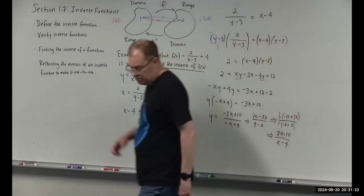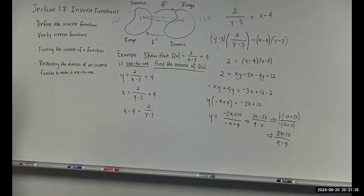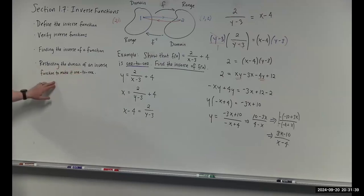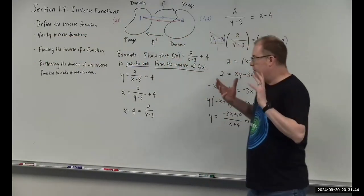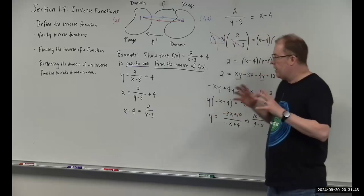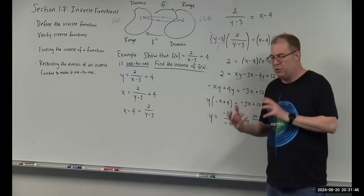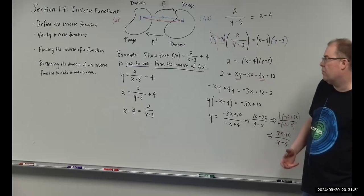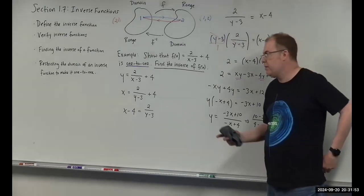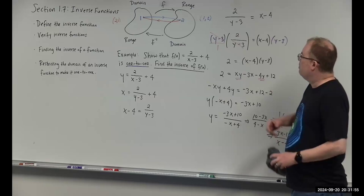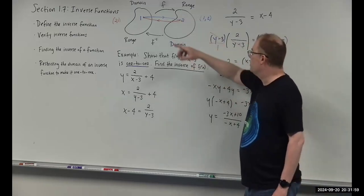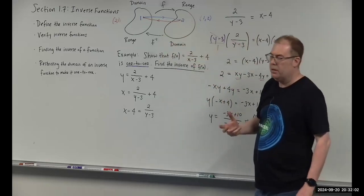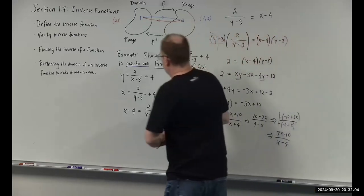The next topic is restricting the domain of an inverse function to make it one-to-one. Sometimes when we find the inverse of a function, the result is not one-to-one. Since both the original function and its inverse must be one-to-one, we need to make modifications. Let's go through an example.